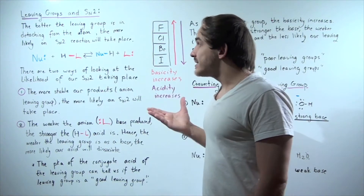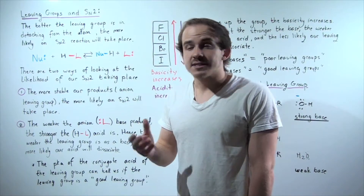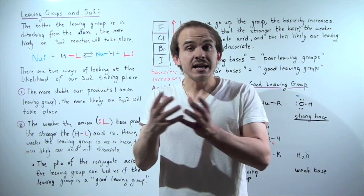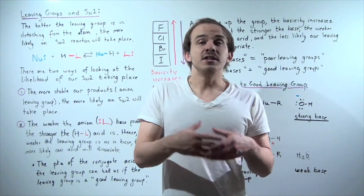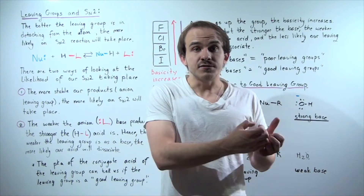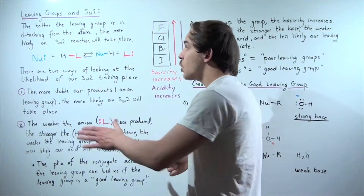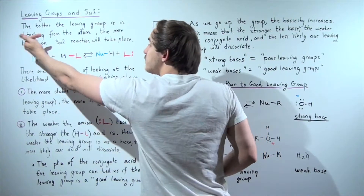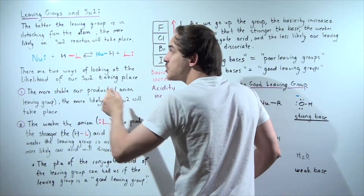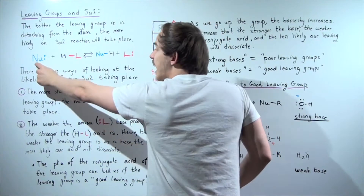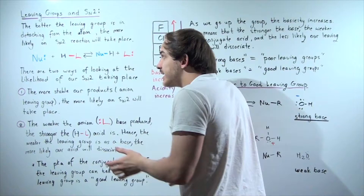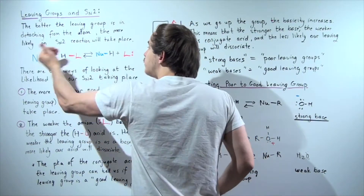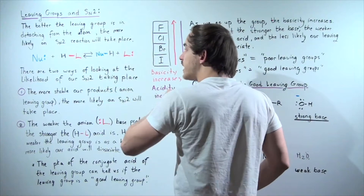That makes sense because the entire premise of an SN2 reaction is that one molecule or atom comes in, makes a bond, and the other atom or molecule leaves and breaks a bond. In our reaction here, we have the nucleophile coming in from this side, taking this H, forming a bond between the nucleophile and the H, and breaking this bond between our leaving group and the H. So one bond forms, one bond breaks.